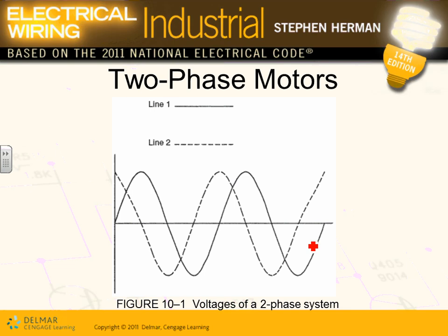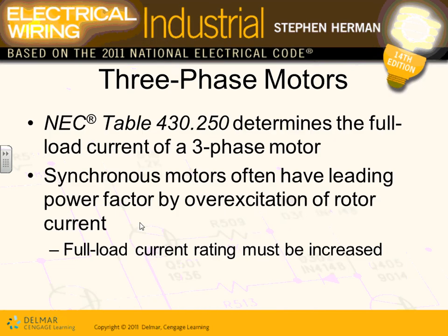Historically, there was a two-phase system where the phases are 90 degrees out of phase with each other, instead of 120 or 180 degrees. That's just a system that used to be used.